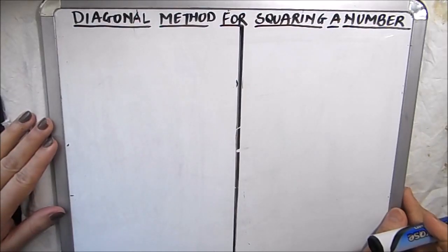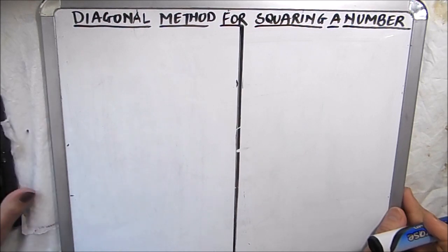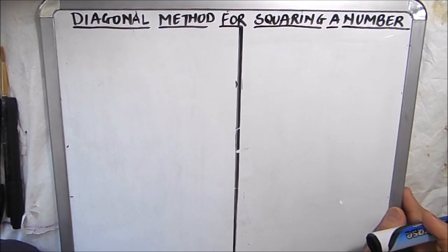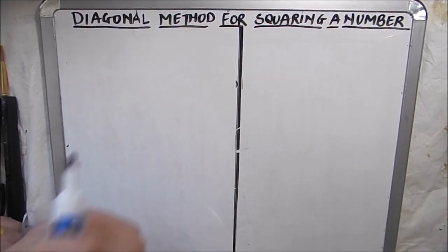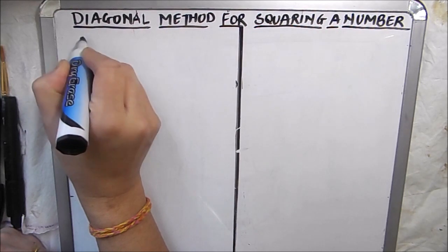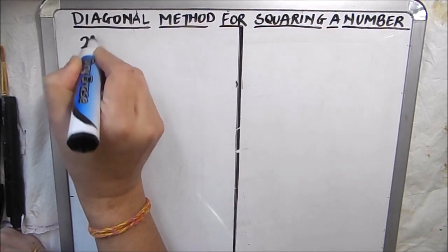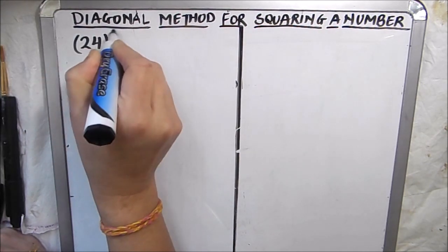Hello viewers, today we are going to learn the diagonal method for squaring a number. We have already learned the column method for squaring a number. The column method can only be used for a two-digit number, but the diagonal method can also be used for three-digit and four-digit numbers. Let's take an example and find the square of 24 by this method.